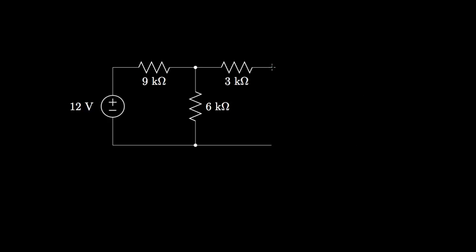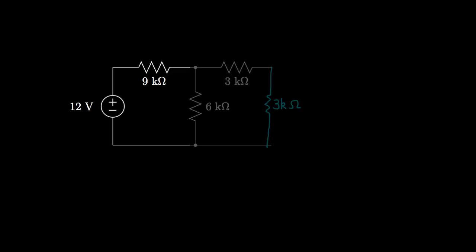From this point to this point, we have 3-kilohm. Next, we can combine the two 3-kilohm resistors, which are in series, and call that 6-kilohms, and that's in parallel with 6-kilohms. When two resistors of equal resistance are in parallel, the equivalent resistance is half their individual resistance, so we replace this network with a single 3-kilohm resistor.